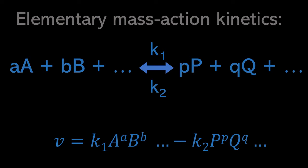This is a generalized form of the elementary mass action kinetic rate law. A few things to point out: in the previous example all stoichiometric amounts were 1, but in the case where the stoichiometric amount — like this lowercase a — is not 1, the concentration in the rate law will be raised to the power of that stoichiometric amount. So if lowercase a was 2, we would have the rate law equal to K1 times A squared times B to whatever the stoichiometric amount for B is.